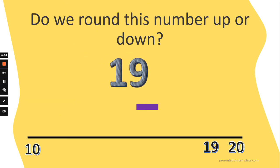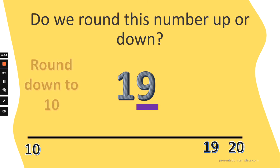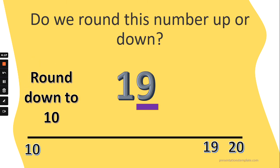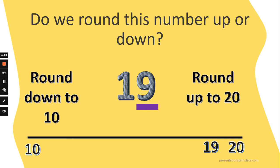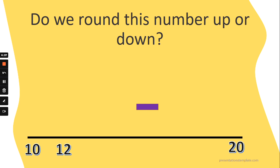What about the number 19? Does 19 round down to 10 or round up to 20? Look at its position — is it closer to 10 or closer to 20? Five, six, seven, eight or nine — round up to the next tens on the number line. 19 is definitely closer to 20, so we say that 19 rounds up. Well done.